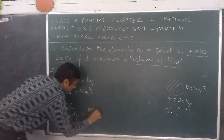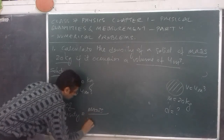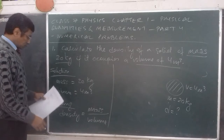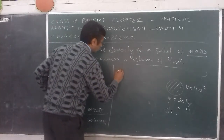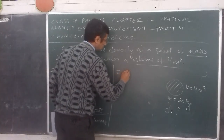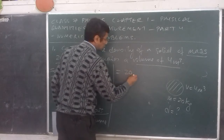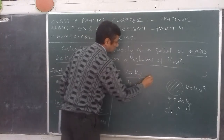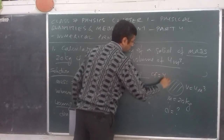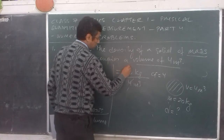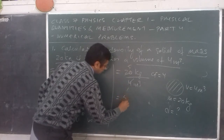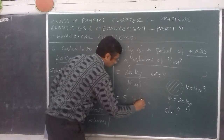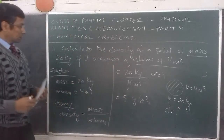Using the formula: density is equal to mass upon volume. We put the values: 20 kg divided by 4 meter cube. We use the common factor 4, so 4 into 1 and 4 into 20 gives 5. We get 5 kg per meter cube as the answer.